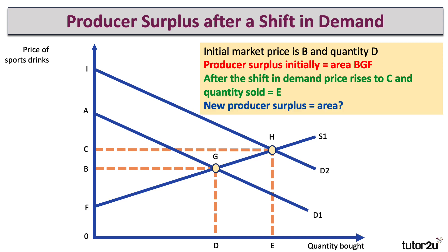What about the new level of producer surplus? There's been a shift in demand: the price has gone up to C and the quantity sold has gone up to E. Can you think about the new area of producer surplus? Maybe press the pause button and just double-check your answer, then we'll go through it. So the producer is now selling more and getting a better price for their products — you'd assume that producer surplus goes up, and it does.